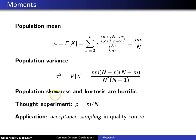If you then look at the third and fourth moments, the population skewness and the population kurtosis turn out to be horrific expressions. Very large. They are closed form, but very difficult to write here, and they've been left out.